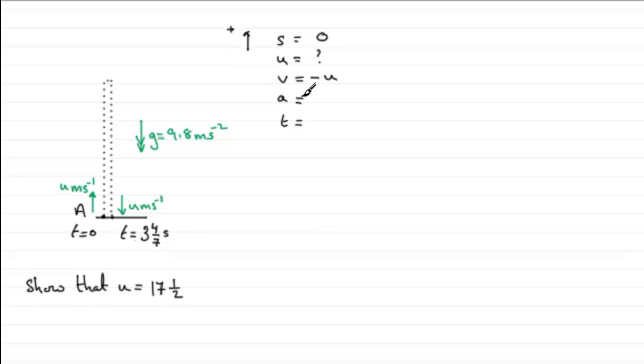A, well A is 9.8 meters per second per second, but because it's acting downwards, it's going to be in the negative sense as minus 9.8. T, well T is three and four sevenths. I'd prefer to have that as a top-heavy fraction. So, if we were to change that to a top-heavy fraction, we've got seven threes of twenty-one, and another four is twenty-five. Twenty-five sevenths seconds.